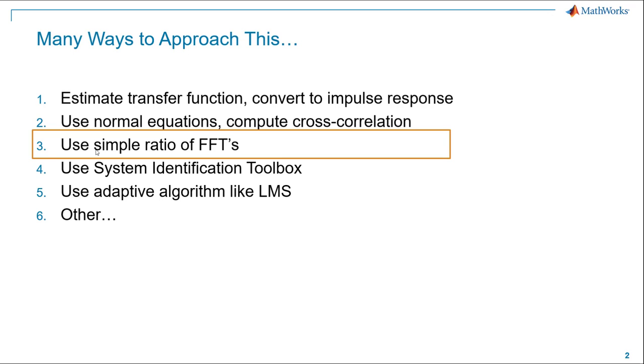Our method today, I'm calling a simple ratio of FFTs, and it is, in fact, an approximation or simplification on approach number one, where instead of estimating a transfer function, we're just doing a simple ratio of FFTs and then taking the inverse FFT of that. But we'll see that's going to have some side effects you have to be aware of. It's not as robust an approach as method number one.